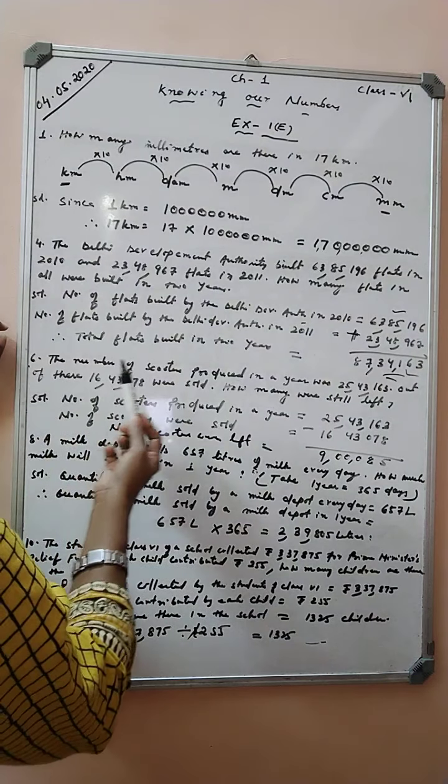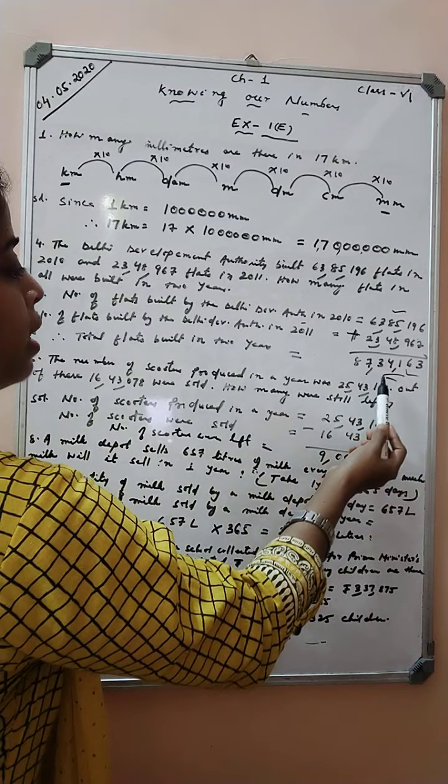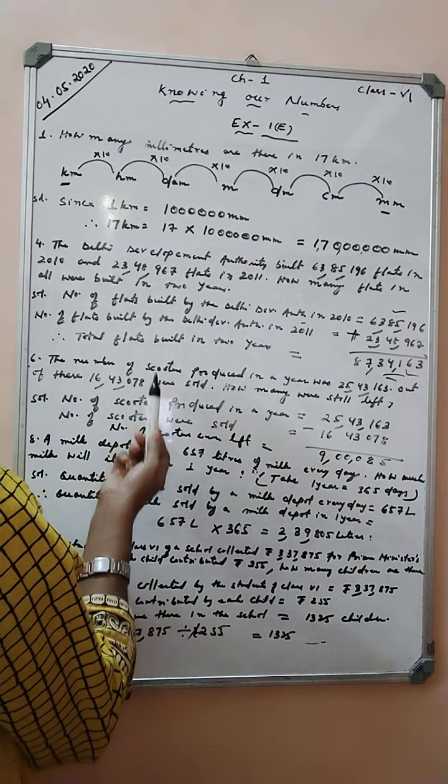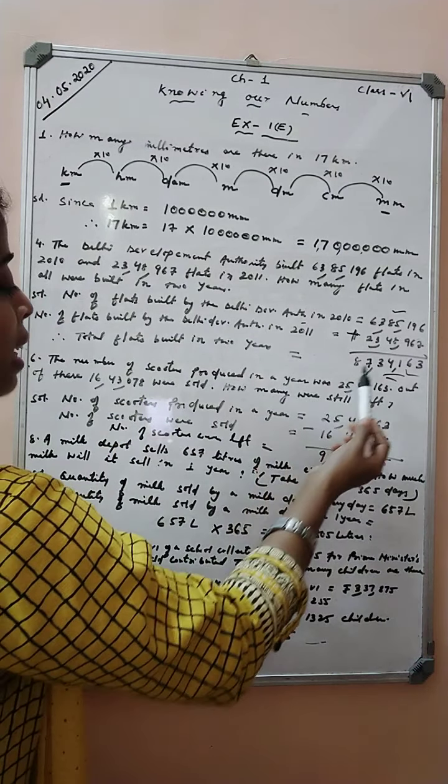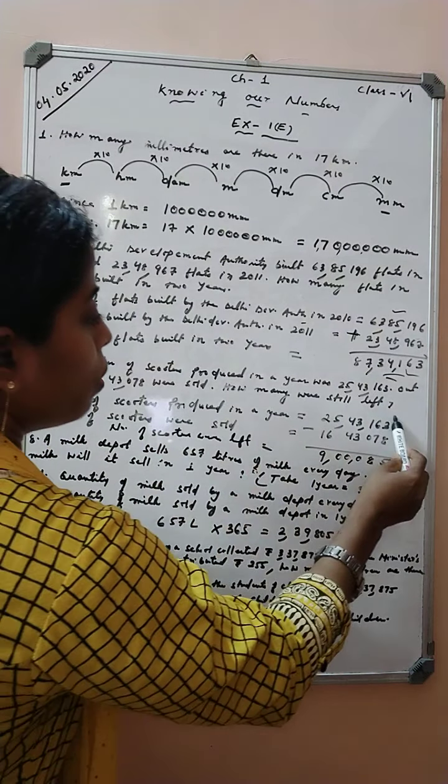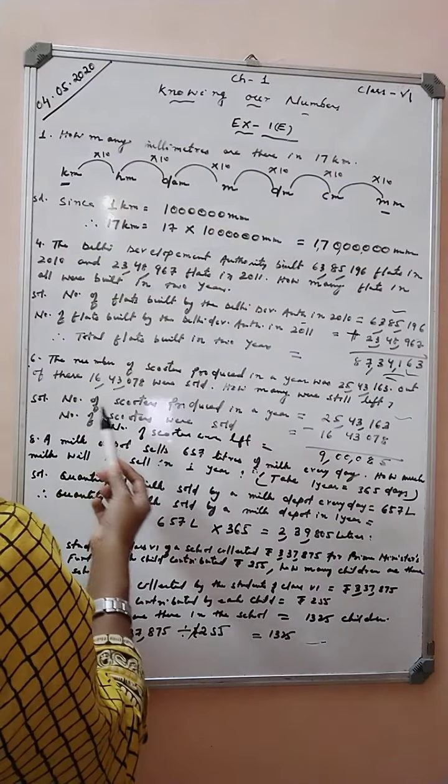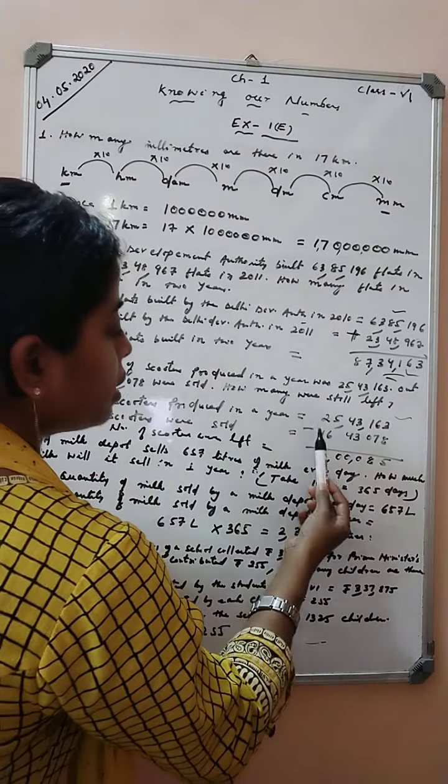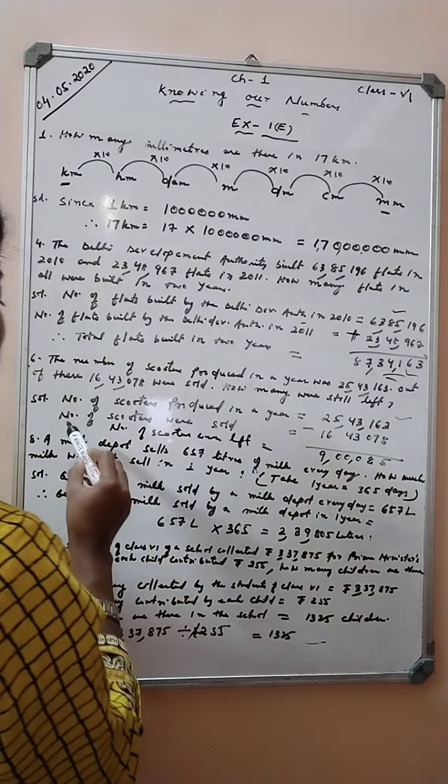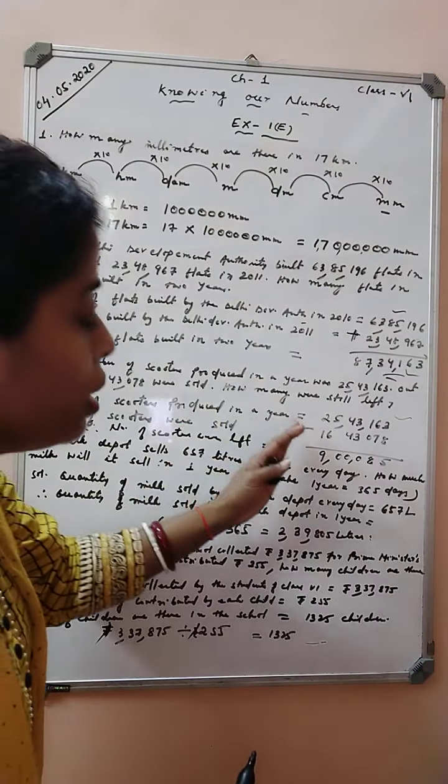Next question. The number of scooters produced in a year was 25,43,163. Out of these, 16,43,078 were sold. How many were still left? Number of scooters produced: 25,43,163. Number of scooters sold: 16,43,078. Therefore, number of scooters left equals what we will do? We have to subtract.